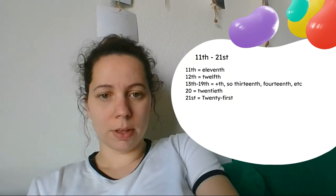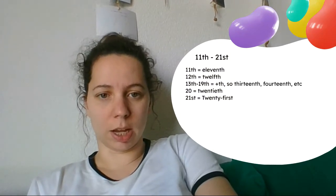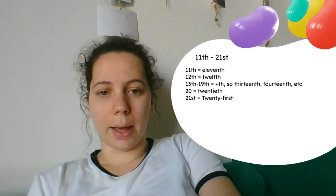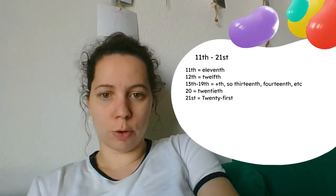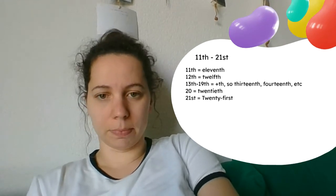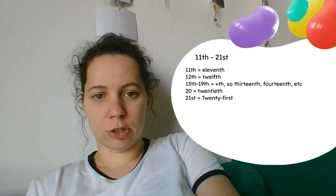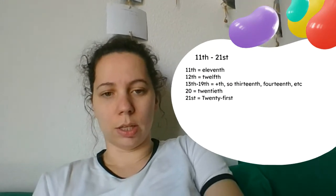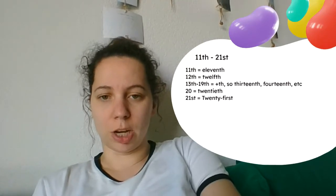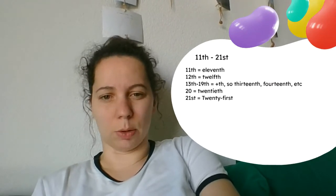But when you reach number 20, we do change something in the spelling again — it's 20th with I-E-T-H. The short version of 20 is just 20 plus th. The way you do it with 20th is also the way you do it with 30th, 40th, 50th, 60th — all of those ending in Y are exactly the same. Now what to do when numbers become bigger than 20? We change the last one into the ordinal number. So if you do 21 and you want to make that into an ordinal number, you change the one — it becomes 21st.